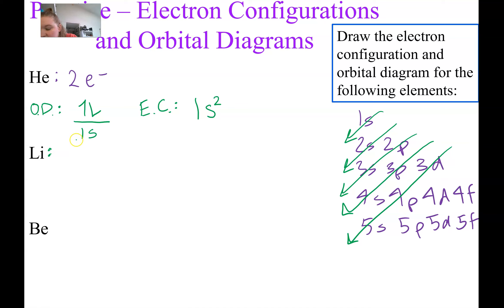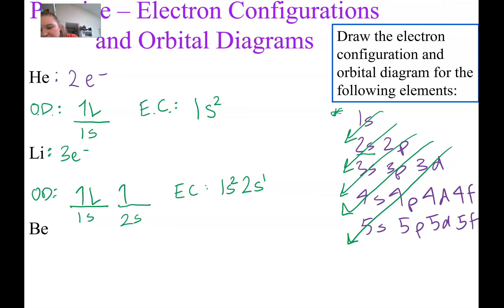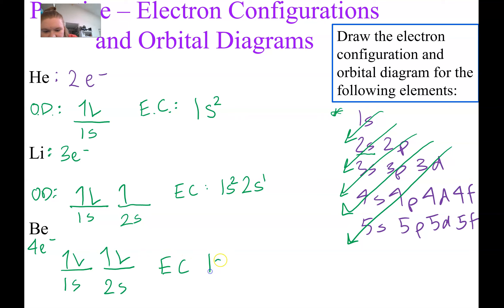Lithium has three electrons. For the orbital diagram, once we put two electrons in the 1S subshell we run out of space, so we move to the next: 2S. We draw another line labeled 2S and place the third electron there. The electron configuration is 1s² 2s¹ — two electrons in 1S and one in 2S. Beryllium has four electrons: 1S gets two, 2S gets two. Its electron configuration is 1s² 2s².